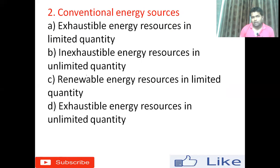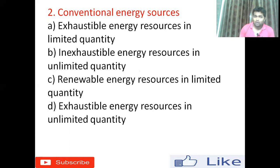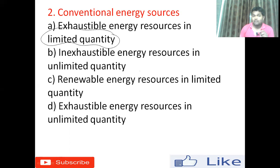Question number two: conventional energy sources. Option A — exhaustible energy resources in limited quantity. Option B — inexhaustible energy resources in unlimited quantity. Conventional energy sources are those where once you use them, they're done — you don't get them back. For example: petroleum products, coal, kerosene, petrol, diesel, LPG, gasoline — all are conventional energy sources. Once you use them, that's over. The right answer is option A — exhaustible energy resources in limited quantity. That's why we are looking for alternative energy sources.